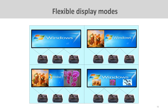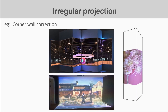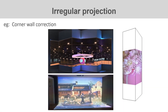Edge Blender also provides additional useful functions such as PIP and POP, which can further extend display flexibility. Corner wall correction is another useful function that enables geometric alignment at corners, allowing you to project images onto pillars or across connected walls and floors to create an immersive watching experience using just one projector.